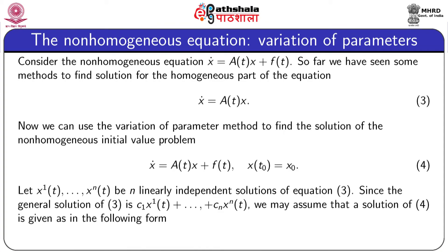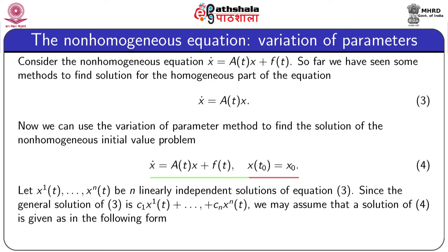We have concluded the power series method discussion. We will now look into the variation of parameters method for non-homogeneous equations. We consider the non-homogeneous equation dx/dt = A(t)x + f(t). Once we have a solution for the homogeneous equation x' = A(t)x, we can use the variation of parameters method to find the solution of the initial value problem x' = A(t)x + f(t) with initial condition x(t₀) = x₀, given by equation 4.